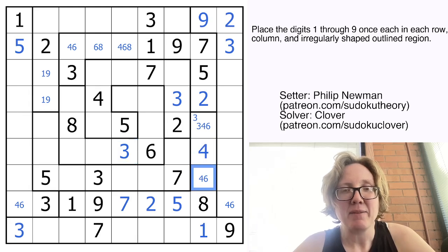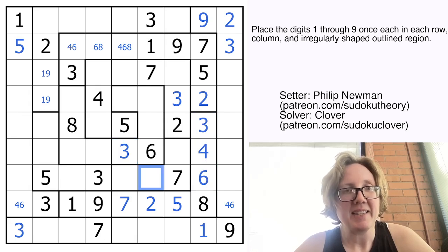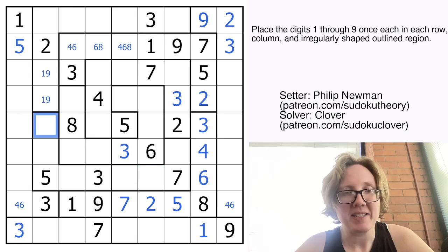And then that's going to make this a four. And it's going to settle my three, four, six triple there. And I think that that's all of the threes in the puzzle. So I can safely ignore threes from here on out.